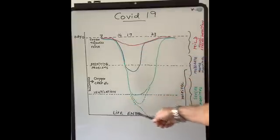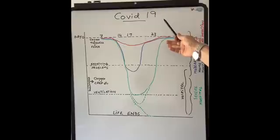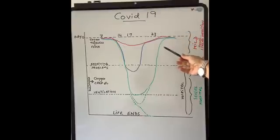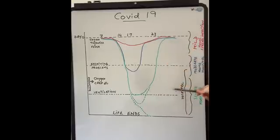This looks like a very complicated graph and what I've tried explaining here is what sort of symptoms people get and I have divided it into three different types of patients. Ones who get mild symptoms, one who get moderate symptoms and one who gets severe symptoms.